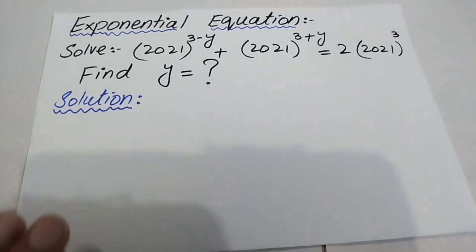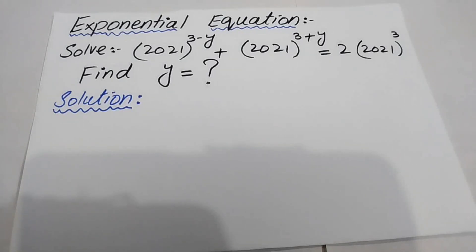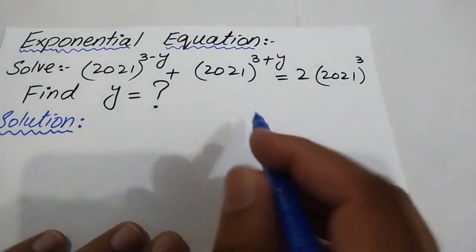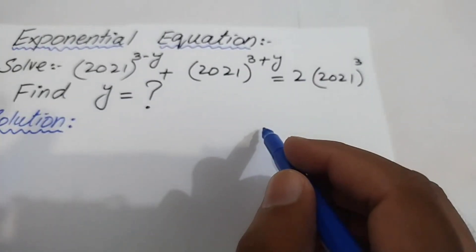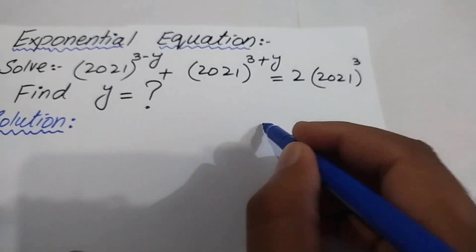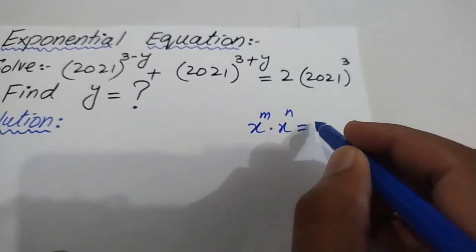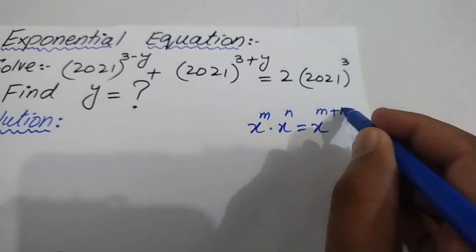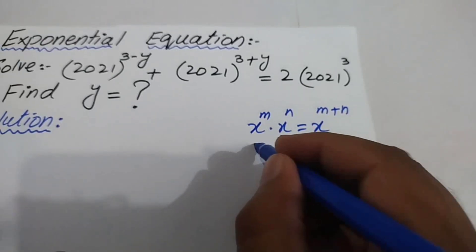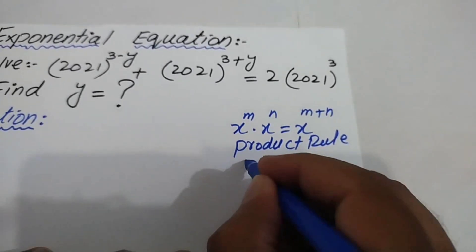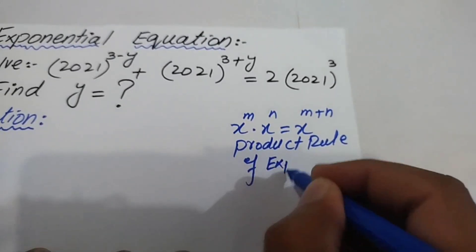To solve this equation, we apply the famous product rule of exponents. The product rule states that x^m × x^n = x^(m+n). We will use this rule to solve the above equation.